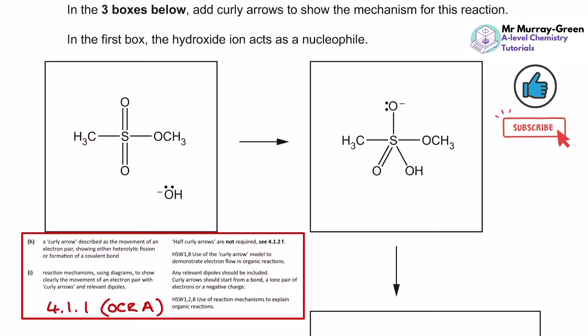In this video tutorial, I'm going to take you through this particular exam question from a unified chemistry paper on OCR A, and I'm going to demonstrate how we could predict the movement of curly arrows in an unfamiliar context.